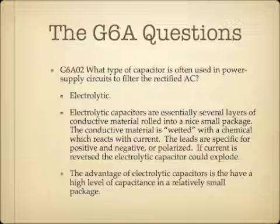What type of capacitor is often used in power supply circuits to filter the rectified AC? This is an electrolytic capacitor. Electrolytic capacitors are essentially several layers of conductive material rolled up like a sweet roll into a small package, and the conductive material is wetted with a chemical that reacts with the current. Because of this wetting, the capacitor is polarized, meaning it will only allow current in one direction. The leads are specifically marked positive and negative, and if the current is reversed on an electrolytic capacitor, it could explode. The advantage is that they have a very high level of capacitance in a very small package, which is why they're often used in power supply circuits to help filter the rectified AC.